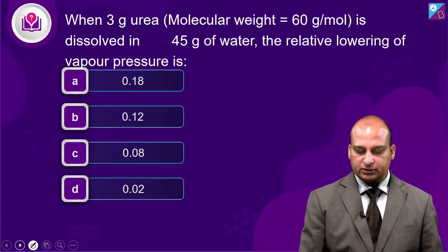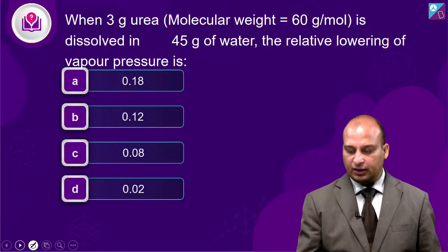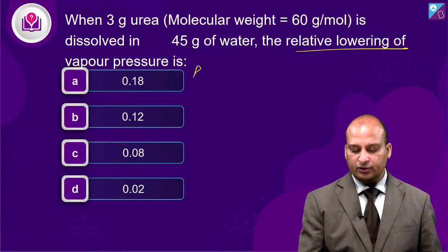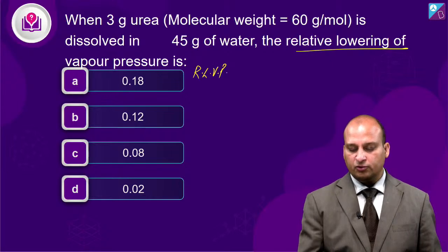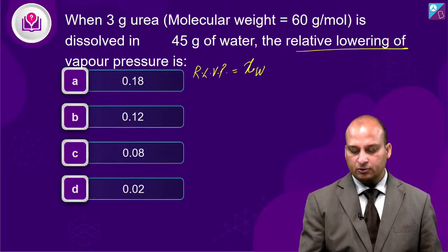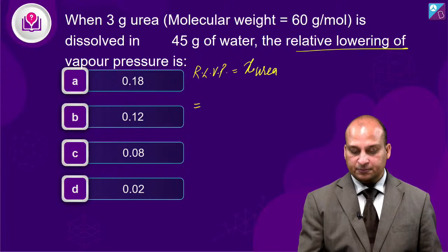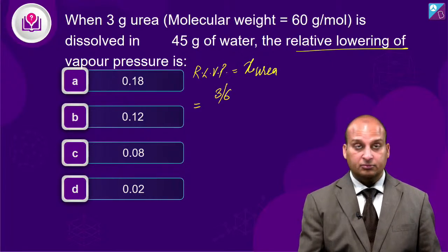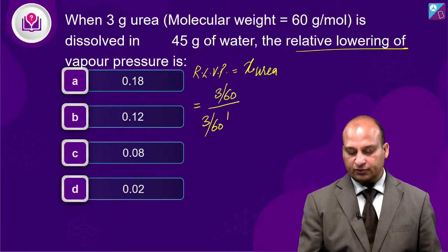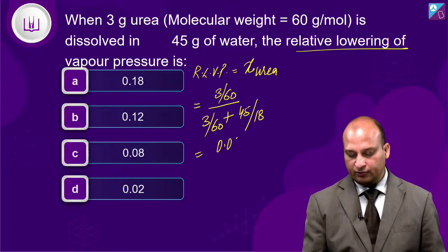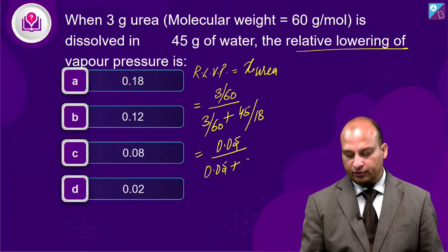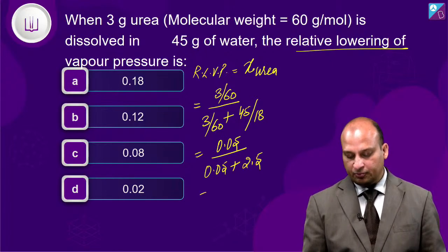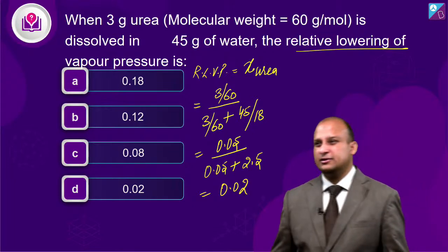Question: When 3 grams of urea is added to 45 grams of water, the RLVP is? RLVP = mole fraction of urea. Moles of urea = 3/60 = 0.05; moles of water = 45/18 = 2.5. RLVP = 0.05/(0.05 + 2.5) = 0.05/2.55 ≈ 0.02. Answer D is correct.